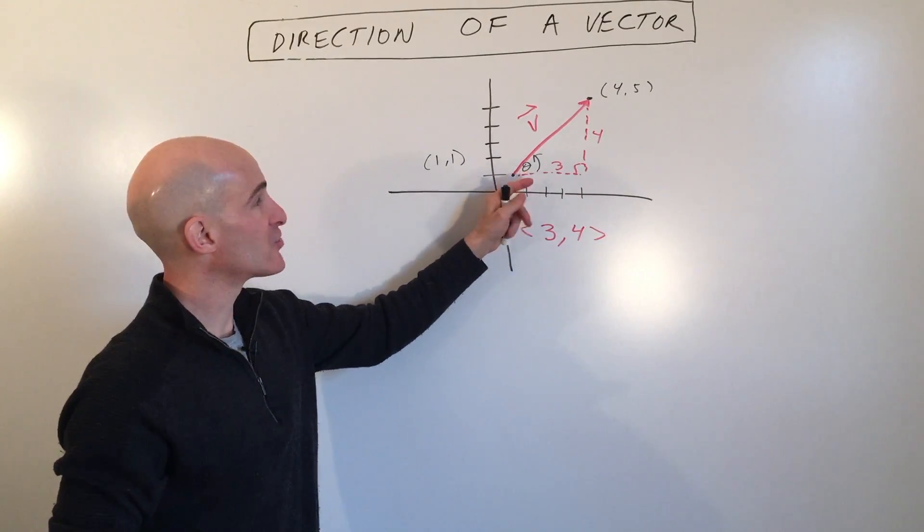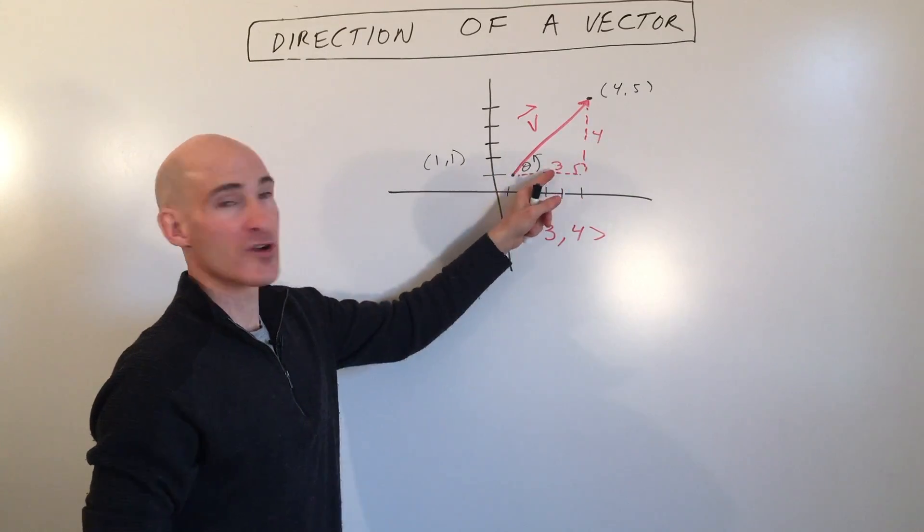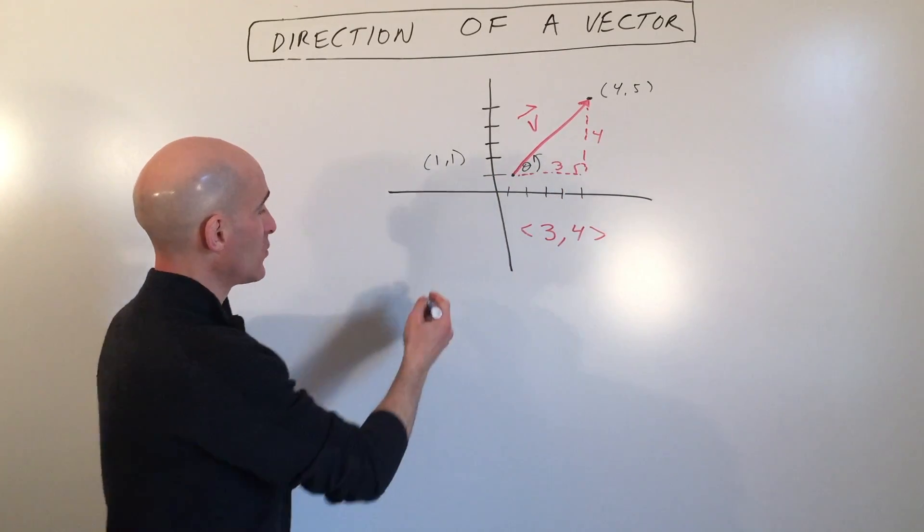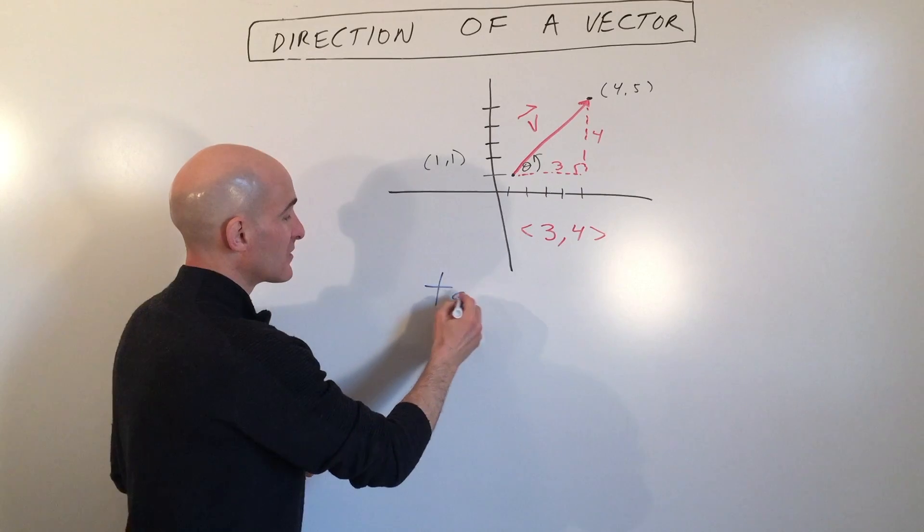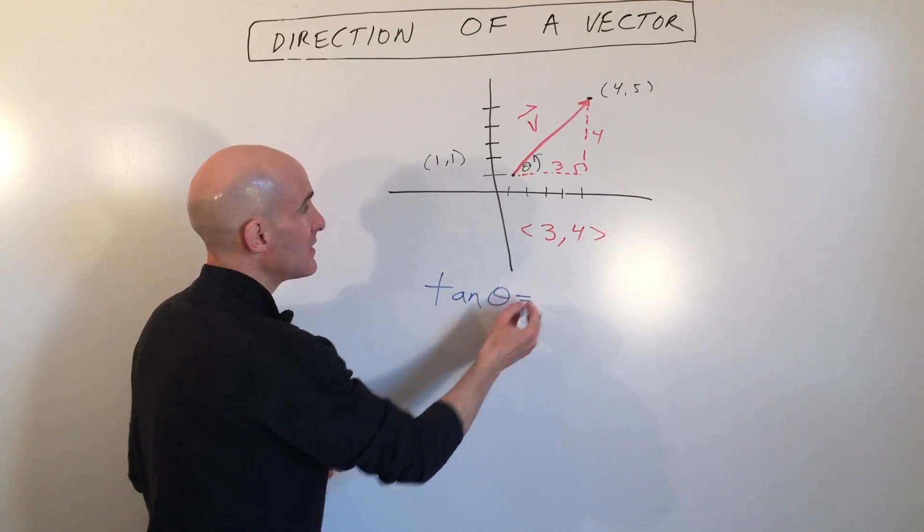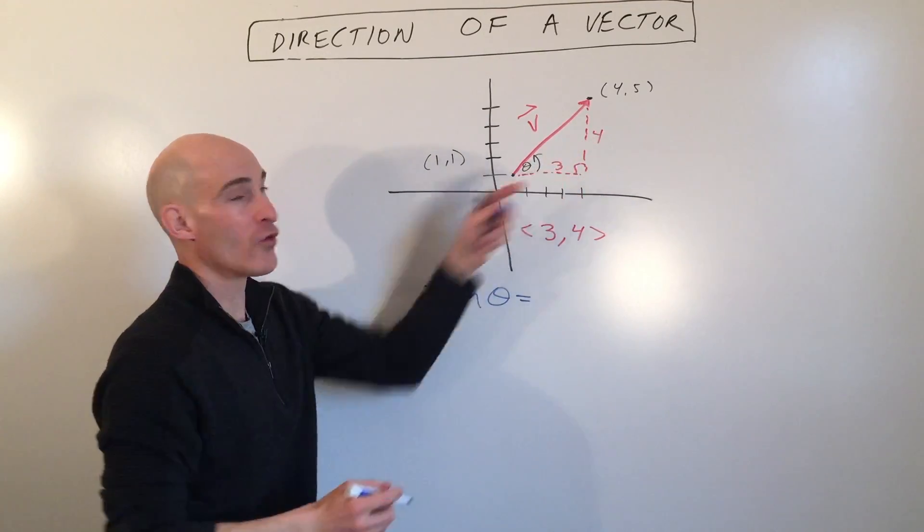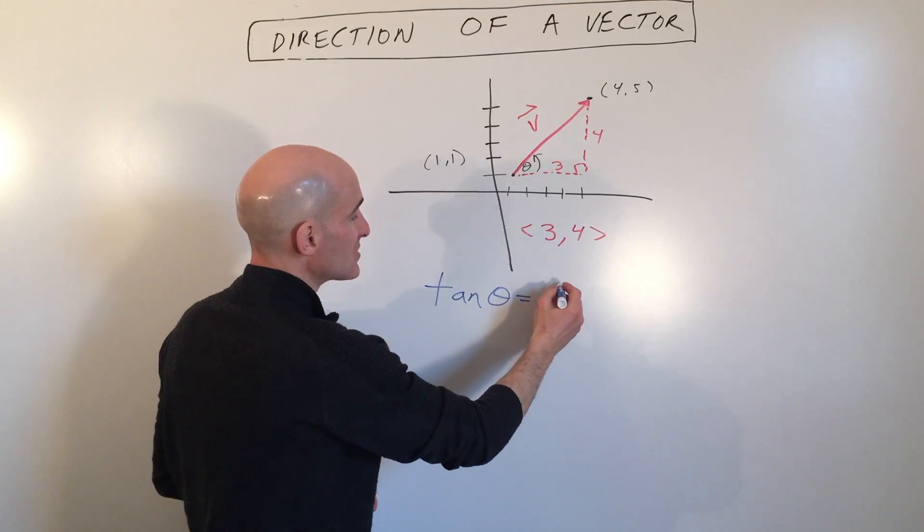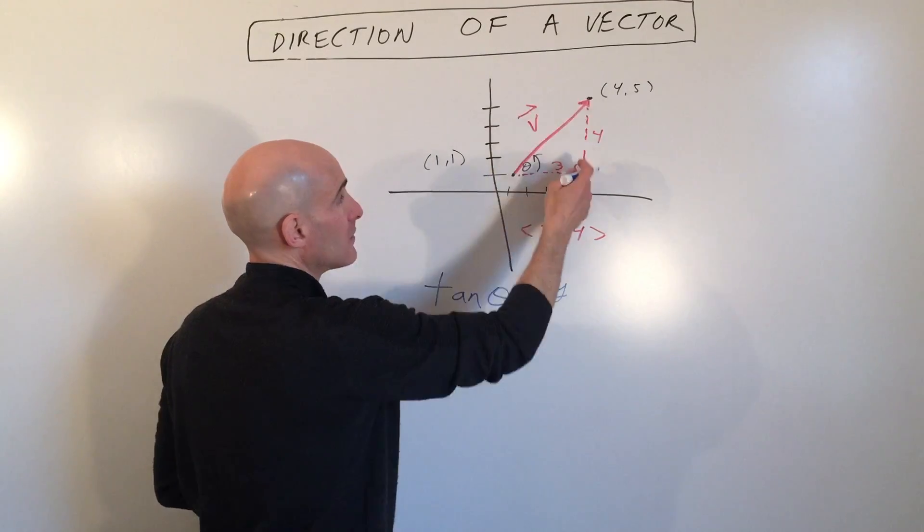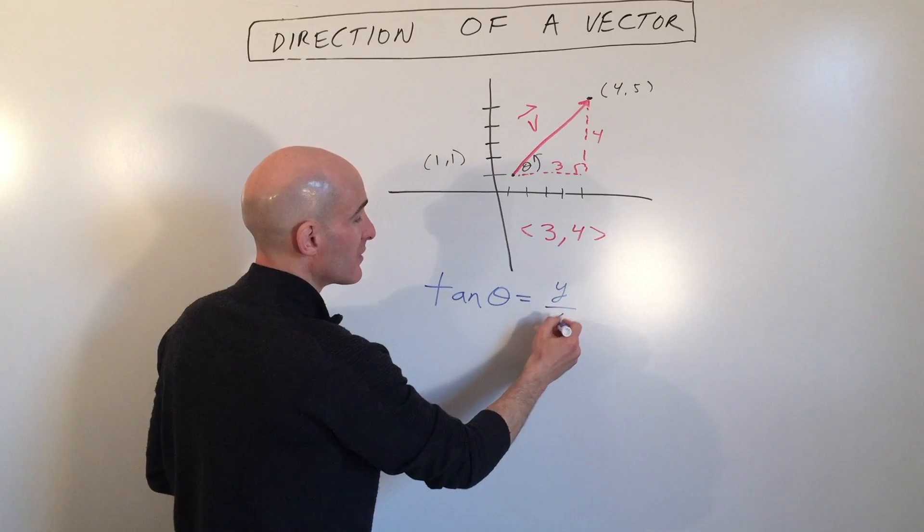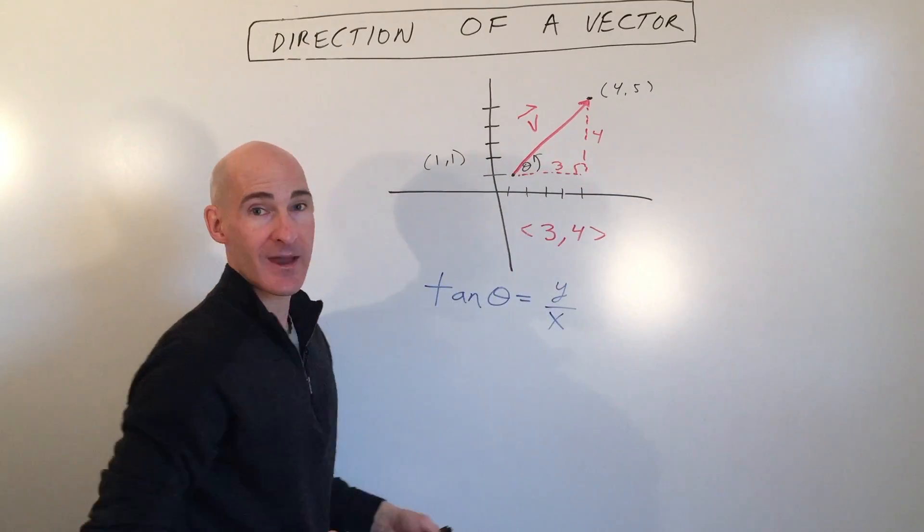Just like we learned in trigonometry, opposite over adjacent is tangent. So what we can do here is write the tangent of theta equals the opposite over the adjacent, which in this case is the y component of the vector over the x component of the vector.